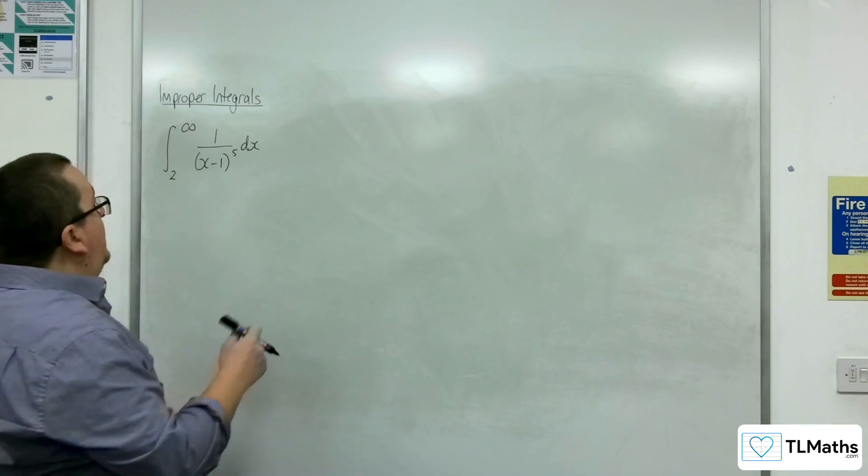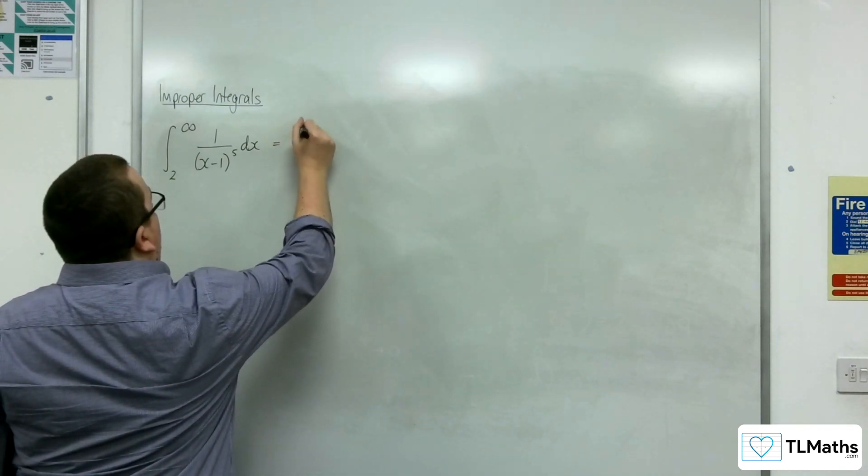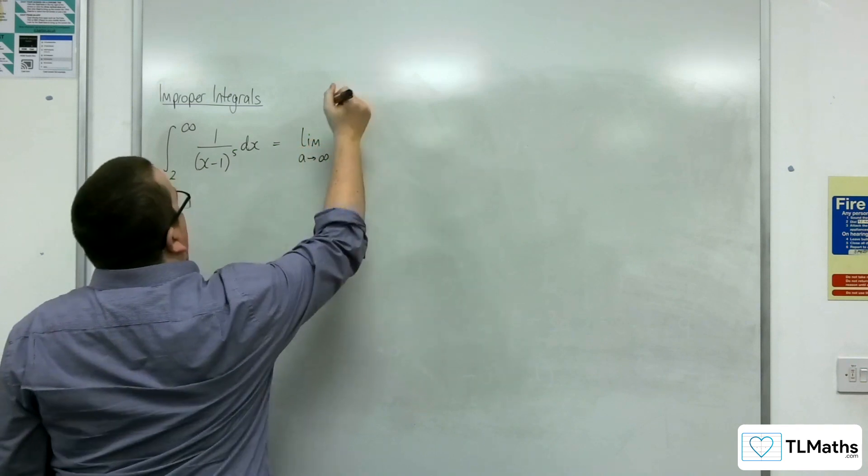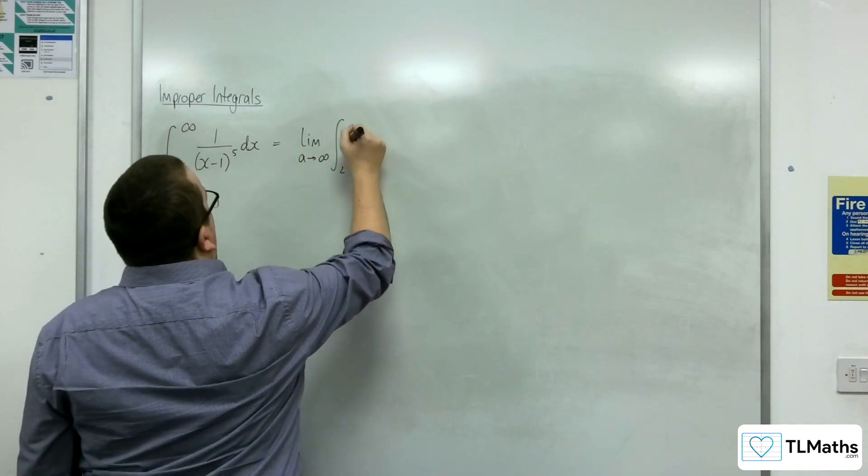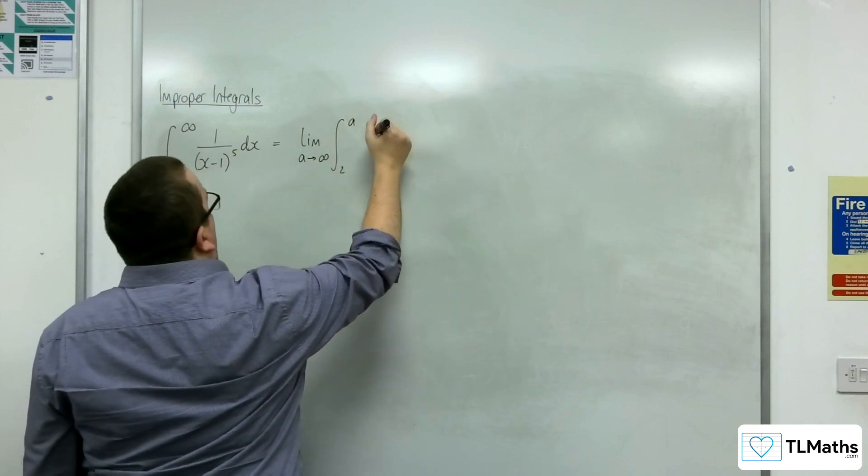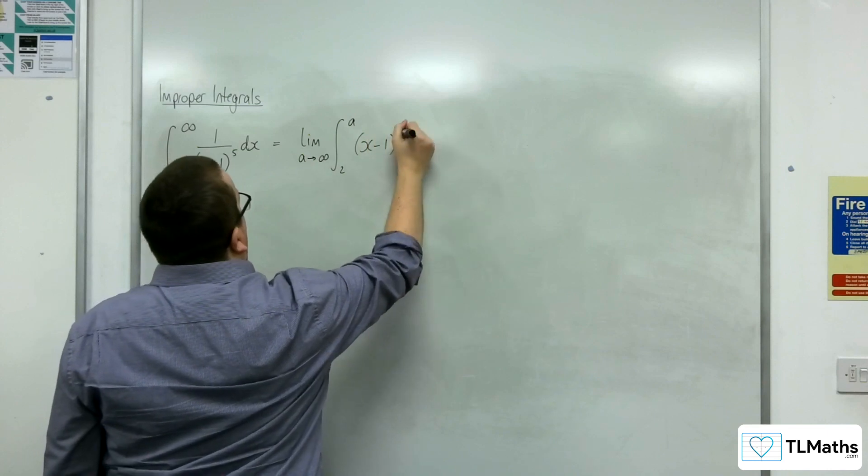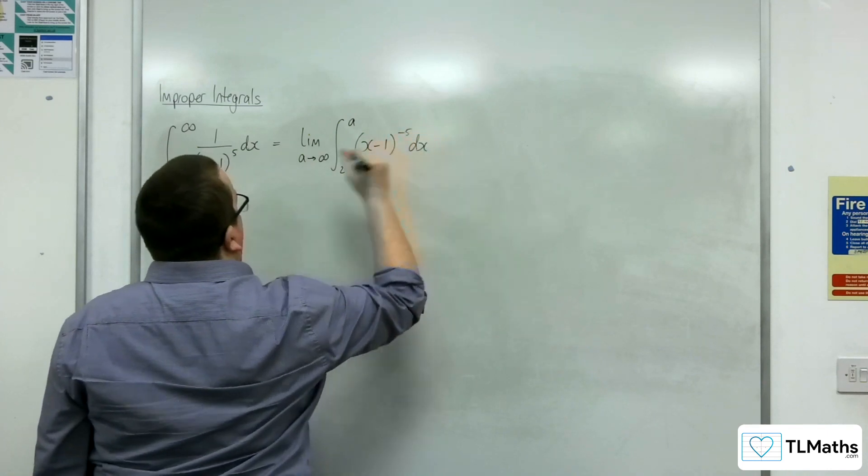So let's get it set up first. So we're going to have the limit as A tends to infinity of the integral between 2 to A of 1 over (x minus 1) to the 5. So I'll write that as (x minus 1) to the minus 5 dx.